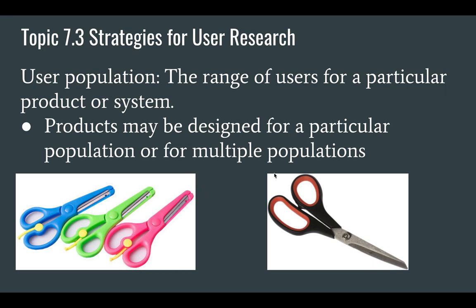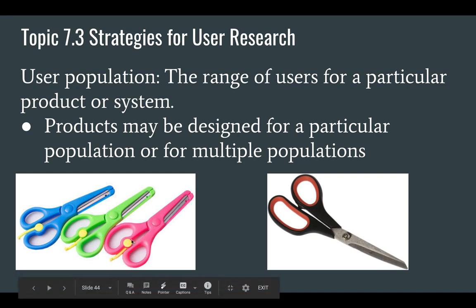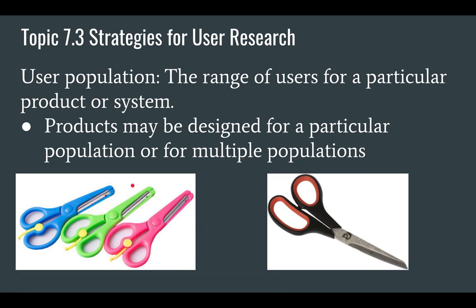Or we could design for multiple populations. These scissors right here are meant for children, so they're going to have smaller holes for fingers and things like that. You might have a pair of adult scissors that a child could use also, maybe an older child. So then we're looking at designing for multiple populations, whereas down here we're looking at designing simply for children. So we need to think about the range of users of our products or systems, and specifically design and do user research on that population.